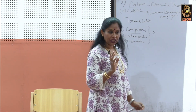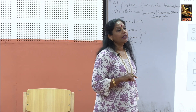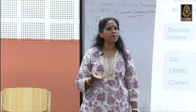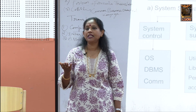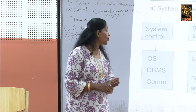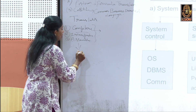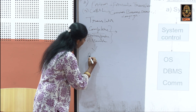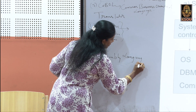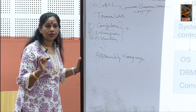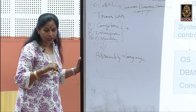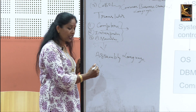A compiler reads the whole program at one time and converts it to low-level language. An interpreter converts line by line — it reads one line, converts it, then reads the next. Assemblers are also language translators, but they only translate programs written in assembly language. Assembly language uses mnemonic codes.